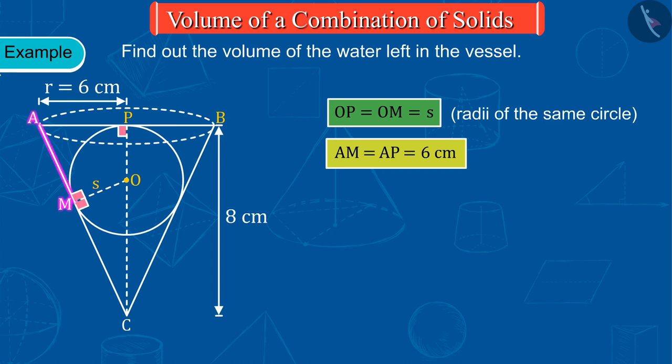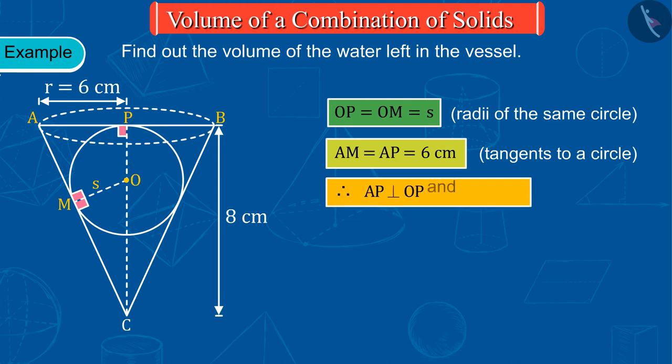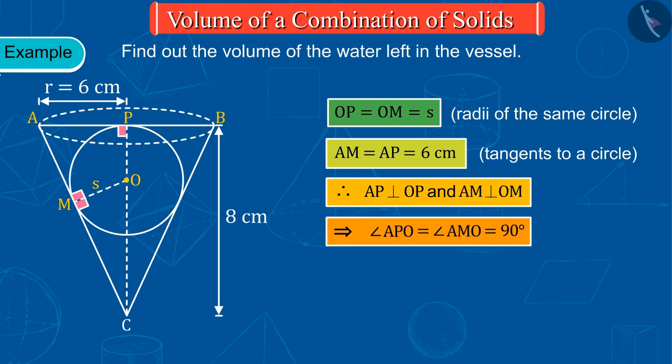Since AM and AP are the tangents to a circle from an external point A, you must remember that the tangent to a circle is perpendicular to its radius. Therefore, AP and OP, and AM and OM, will be mutually perpendicular.